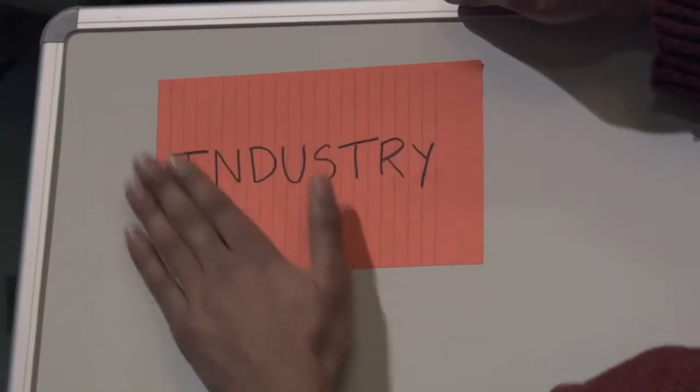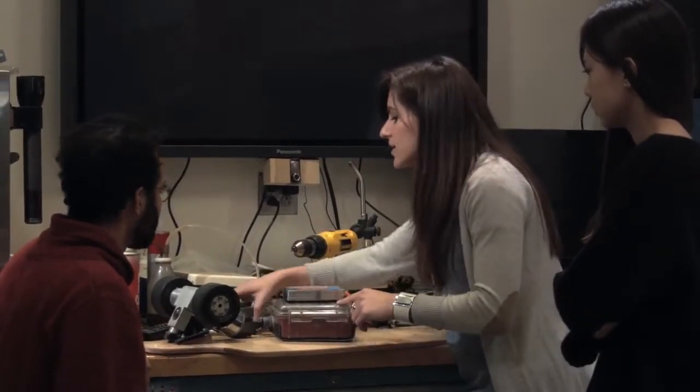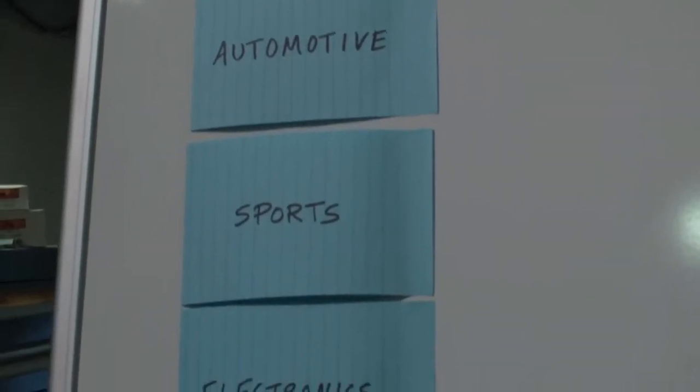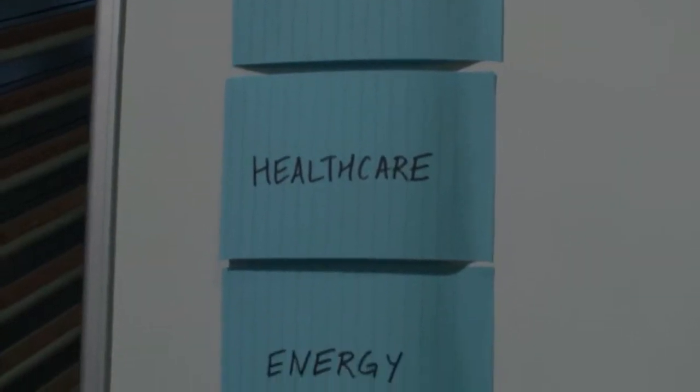Identify potential industries for your idea. In the case of the friction energy technology invented by our students, potential industries could be the automotive industry, sports, electronics, healthcare, energy, and architecture, to name a few.